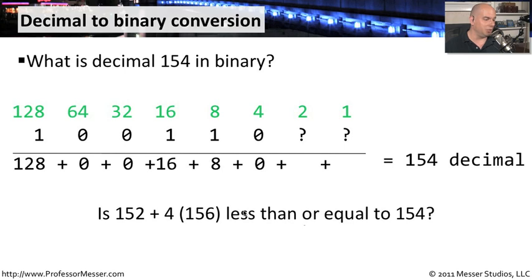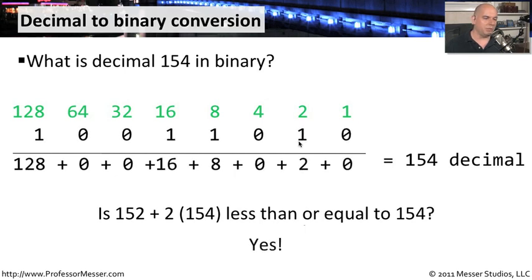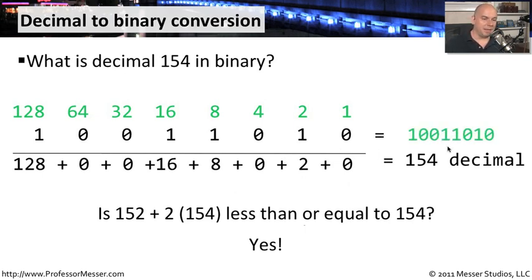The next one down is 2. Is 152 plus 2 equal to 154? Exactly — so we put a 1 in that mark, and there's nothing left over, making the 1-bit position a 0. So the answer is: 128 plus 16 plus 8 plus 2 equals 154, which means the binary representation of 154 is 10011010.